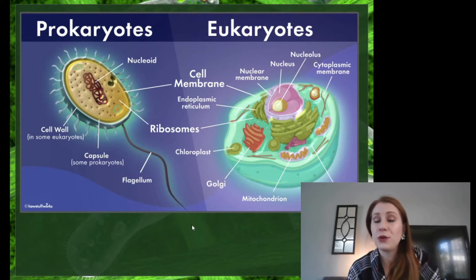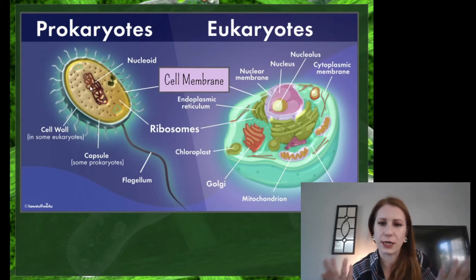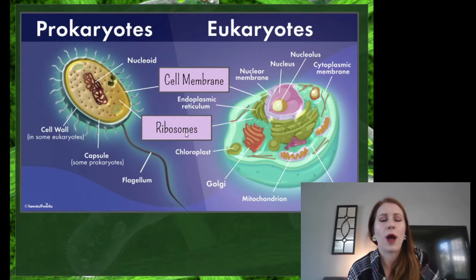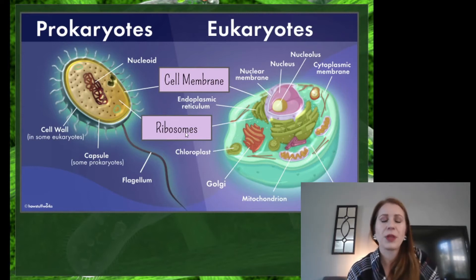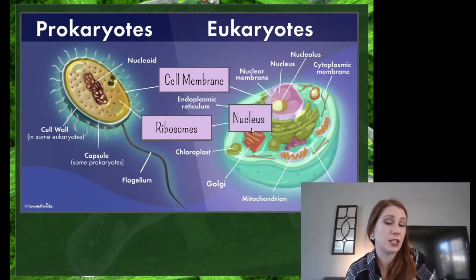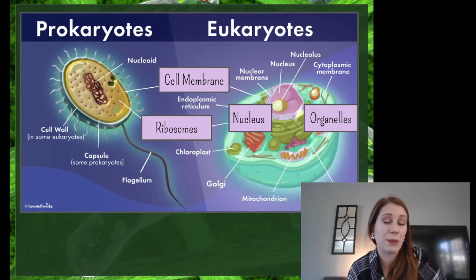Quick recap of prokaryotes versus eukaryotes. Starting with similarities: they both have a cell membrane — you can use 'plasma membrane' and 'cell membrane' interchangeably, it's the same thing. They both have ribosomes, which are what make proteins in our body. We take our DNA and turn it into a functional protein using a ribosome. Proteins do most of the work in our cells. Eukaryotes specifically have a nucleus and organelles — like the Golgi apparatus, a chloroplast, or mitochondria. Cytoplasm is the same in both cells as well.